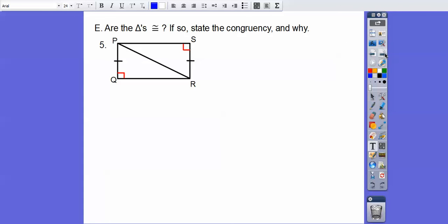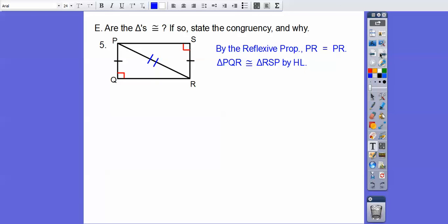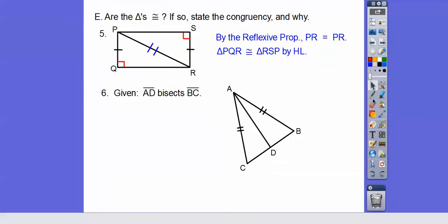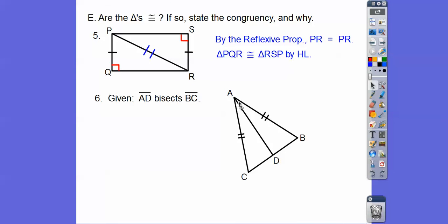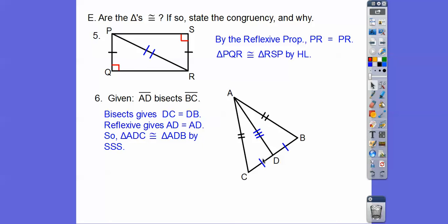How about these? We've got right triangles, and by the reflexive property we can make that hypotenuse congruent. Since we've got the markings showing the legs congruent, we can say HL — the Hypotenuse-Leg theorem. Just make sure you get your order correct. This next one says AD bisects, cutting the segment to make those parts equal — midpoint. By the reflexive property that side equals itself, so these triangles are congruent by Side-Side-Side.